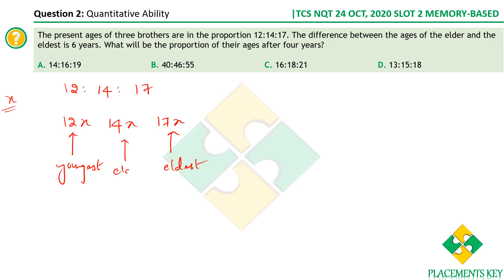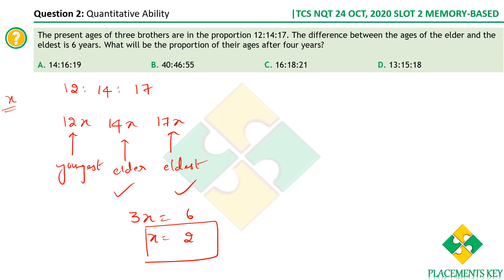The difference between the ages of the elder (14x) and the eldest (17x) is six. So 17x − 14x = 3x = 6, giving x = 2. The ages are therefore 12×2 = 24, 14×2 = 28, and 17×2 = 34.